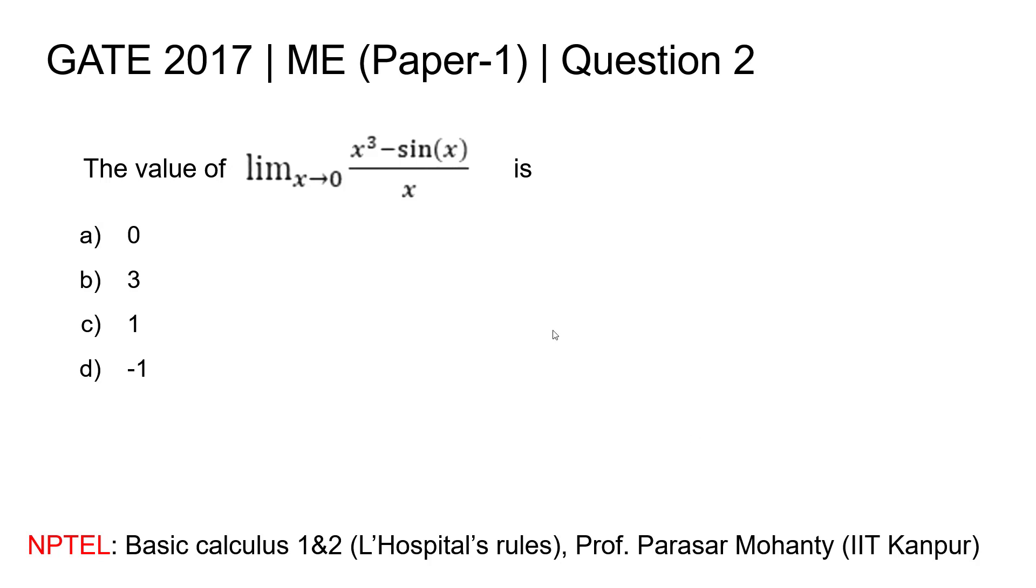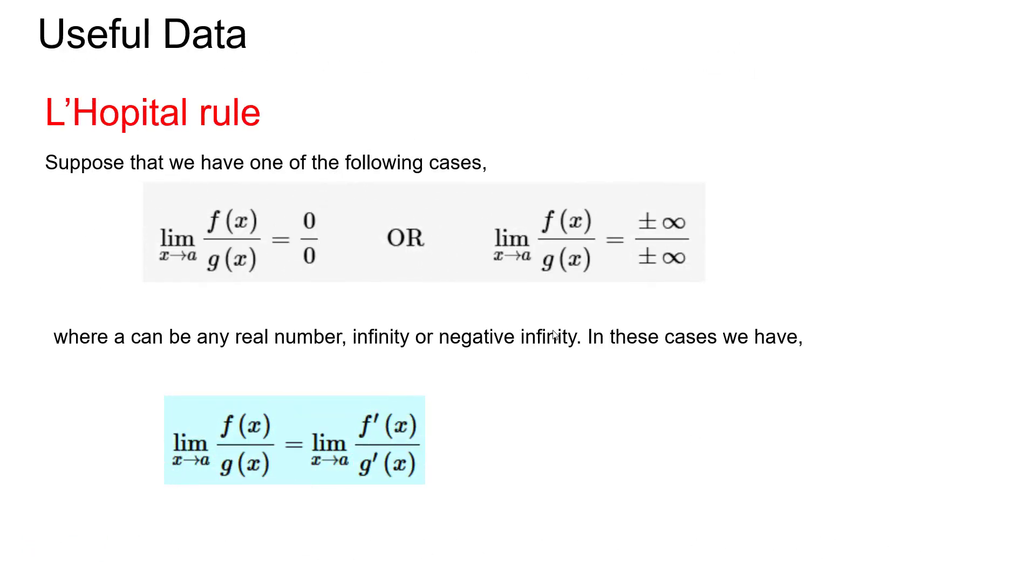Let's go ahead with the problem. According to L'Hôpital's rule, if you are given a function that can be represented as f(x) by g(x) when x tends to some a, and when you substitute x equals a, you are getting a zero by zero form.